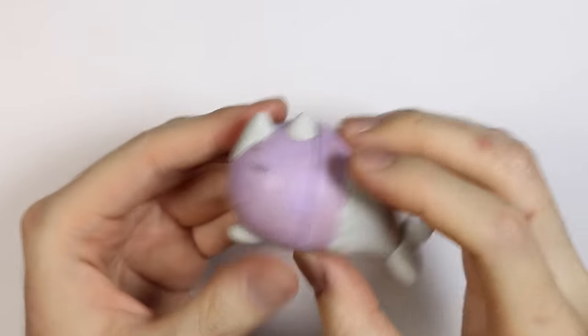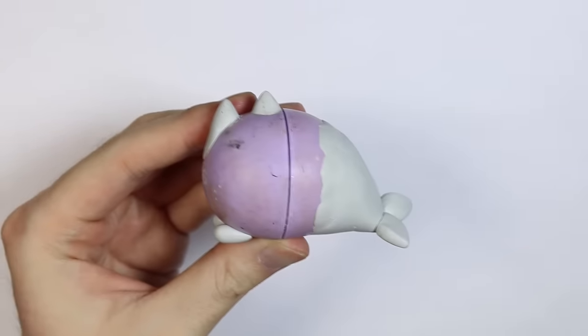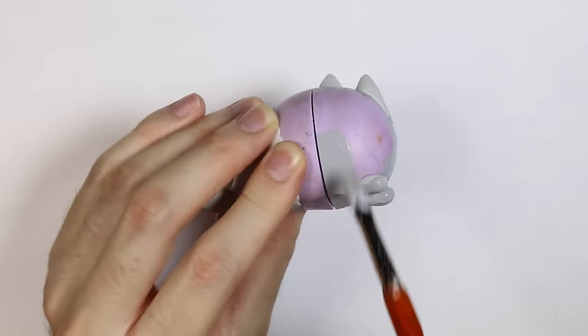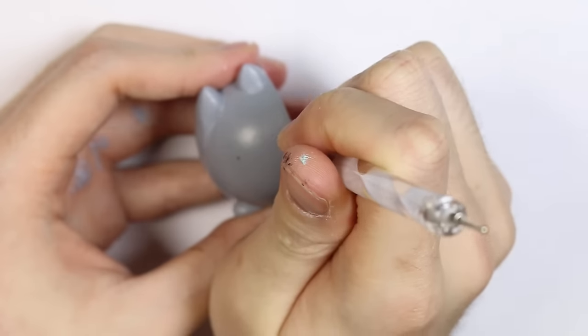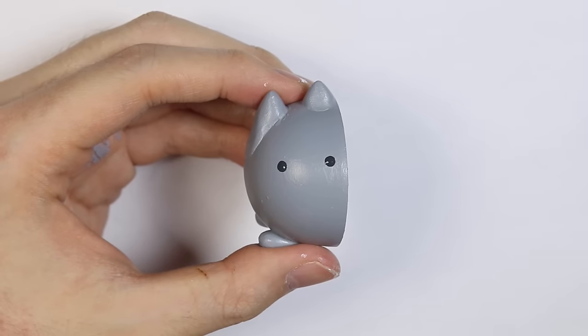Once it's fully dried, it's now ready for a layer of paint. I'm painting the head end of Pusheen all grey, and then I'm dotting on the eyes and painting on the rest of the details such as the stripes and its nose.